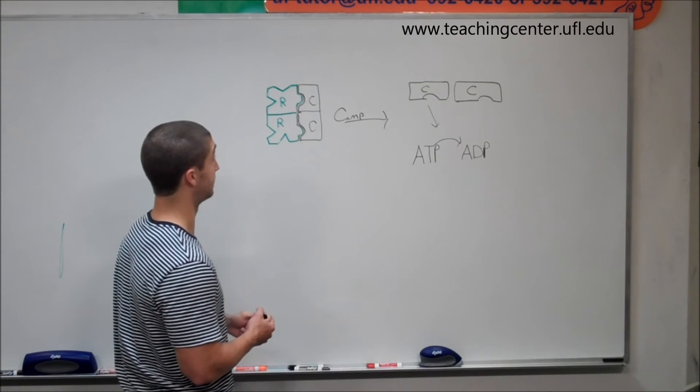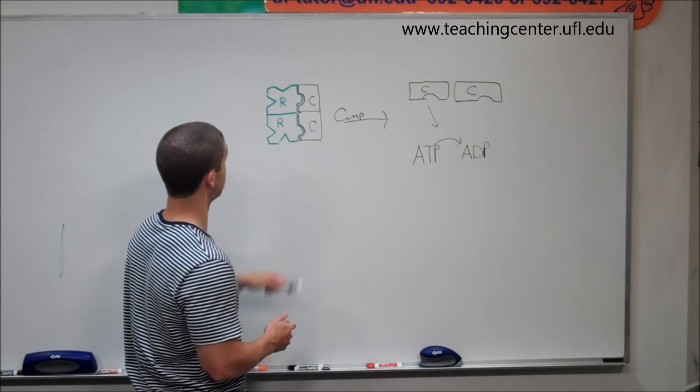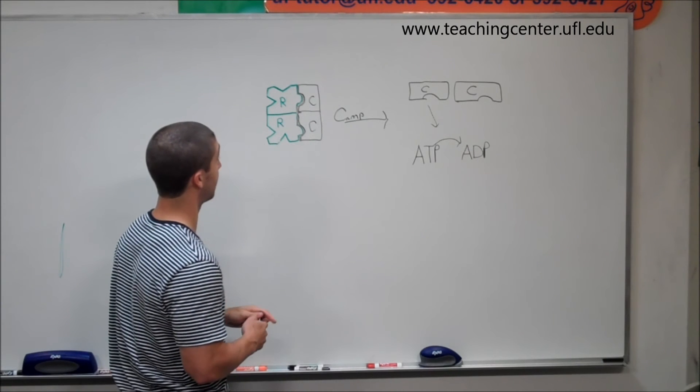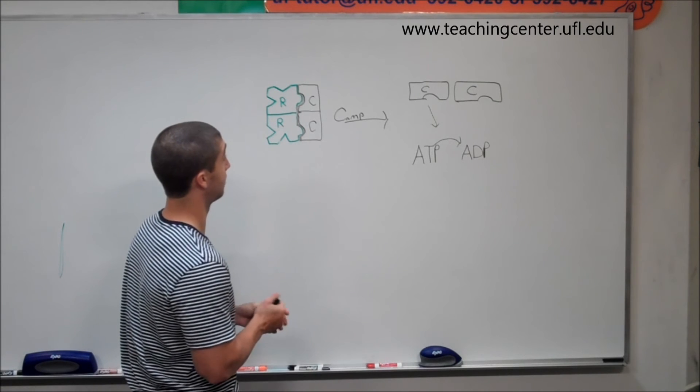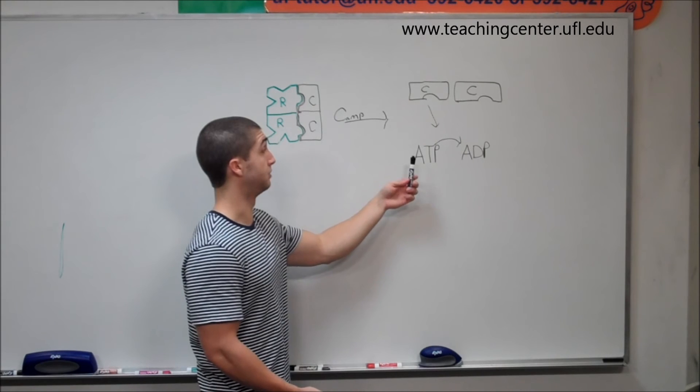If you have a mutation in the R site that's not going to help regulate the catalytic site, you're going to have a protein kinase A that's constantly active and you don't want that. You can also have a mutation in the catalytic site.